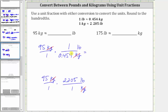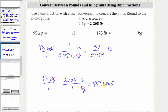And now we multiply. We have 95 times one, which is 95, over one times 0.454, which is 0.454, and now the units are pounds. In the second conversion, notice how the denominator is one. When we multiply, we just have 95 times 2.205, and again, the units are pounds.